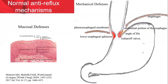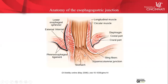We have to think about the normal anti-reflux mechanisms as mucosal defenses and mechanical defenses. We're going to focus on the anatomy of the normal anti-reflux mechanisms. The anatomy of the esophageal-gastric junction is complex, with the esophagus terminating at the stomach at the Z-line. We have the internal and external components of the lower esophageal sphincter complex, and the phrenoesophageal ligament with its upper part inserting on the esophagus several centimeters above the muscular sphincter. The stomach has a component of the lower esophageal sphincter with sling fibers extending onto the cardiac region.